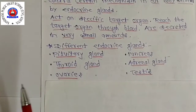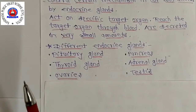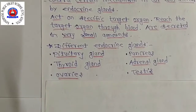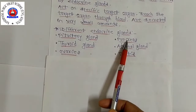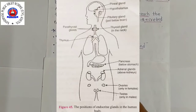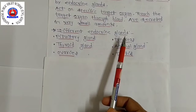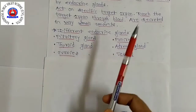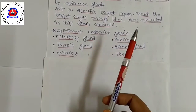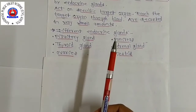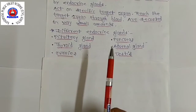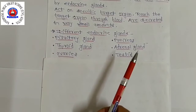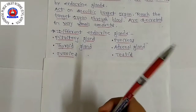The main symptom of goiter is that the neck of the person appears to be swollen due to enlargement of the thyroid gland located in the neck. The next gland is the pancreas, which is located just below the stomach. The function of insulin hormone is to lower the blood sugar level, and a deficiency of insulin causes a disease known as diabetes.